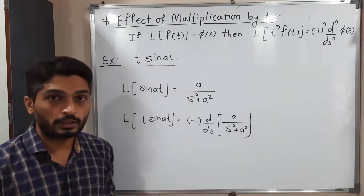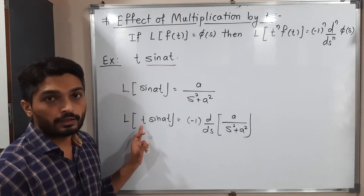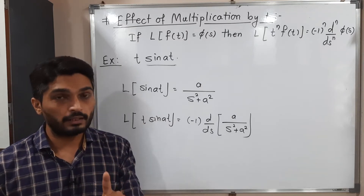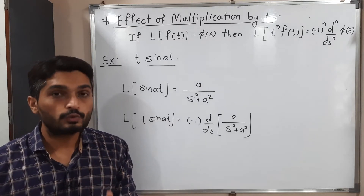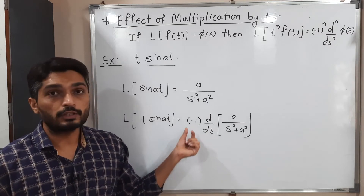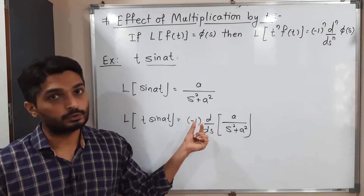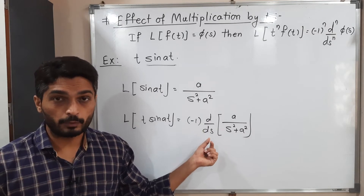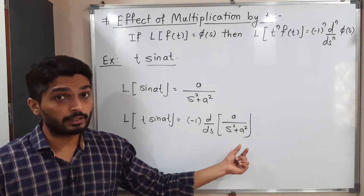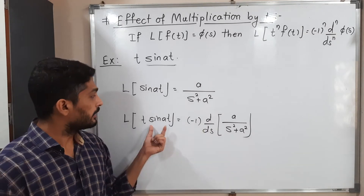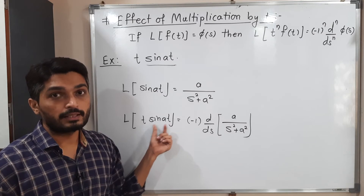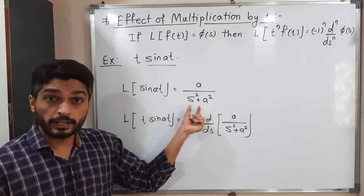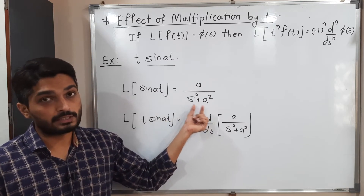Let me repeat the procedure. We have t whose power is one, so n = 1. The formula says (-1)^n, with n = 1, times the first derivative — derivative of the Laplace transform of its neighboring function. The neighboring function is sin(at), whose Laplace transform we have already calculated as a/(s² + a²).